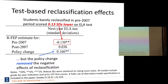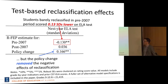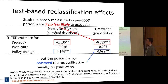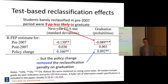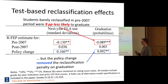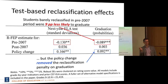Looking further out at graduation: in the pre-2007 period, there's a negative effect of reclassification on graduation — those kids are graduating at rates nine percentage points lower than kids who just barely failed to attain the criteria and weren't reclassified. There's no effect of reclassification on graduation in the post-2007 period. Again, the policy change effectively removed the reclassification penalty on graduation.